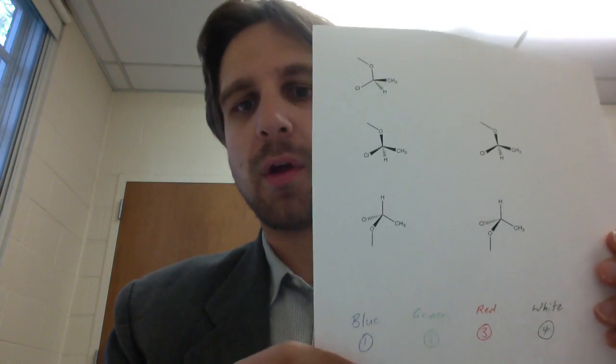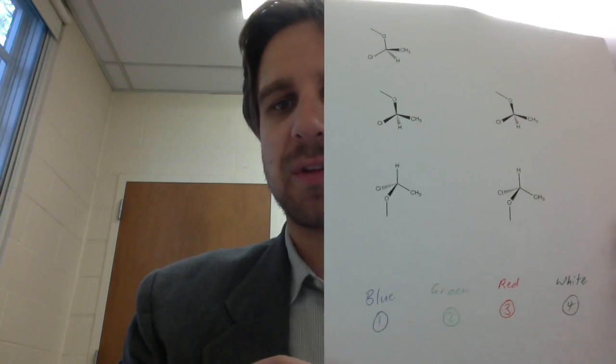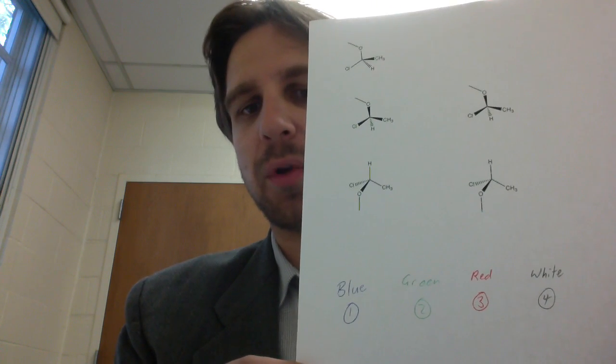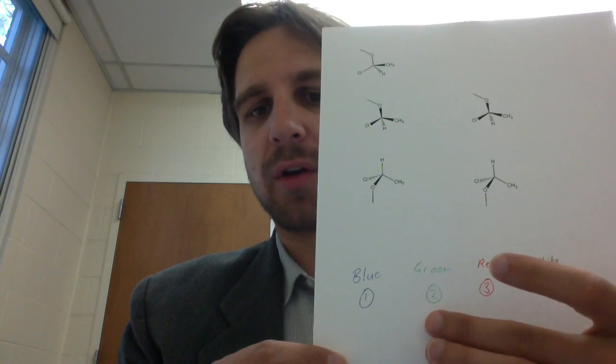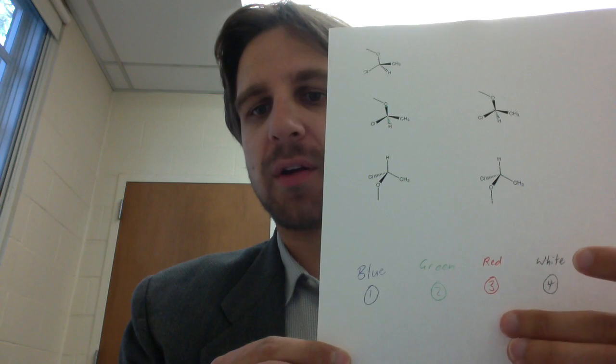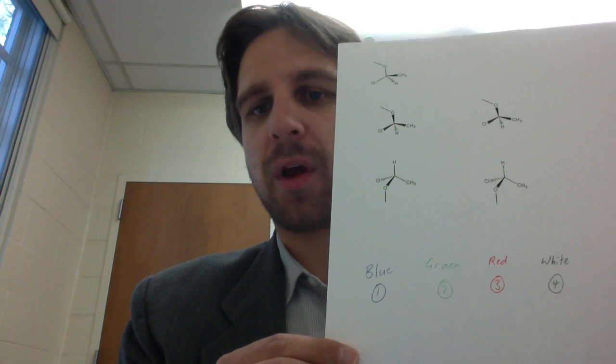However, this can be very hard to visualize when, for instance, the lowest priority atom... I'll be using the convention that blue is priority one, green is priority two, red is priority three, and white is priority four.